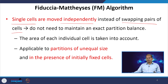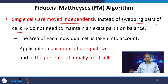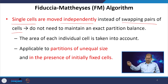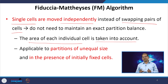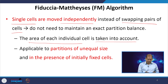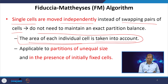FM does not look at the number of nodes or cells in a partition, but at the area of the partition. The number of nodes does not matter; the area of the partition is what is important. Therefore, the area of each individual cell must be provided as input to the FM algorithm, because that is used as the criterion for moving a cell from one partition to the other.